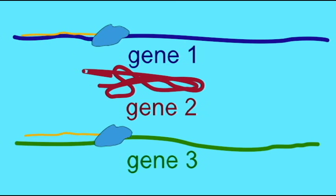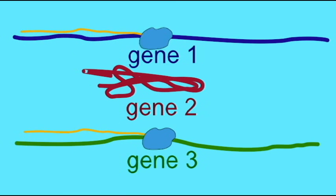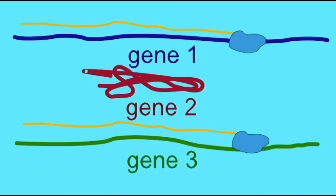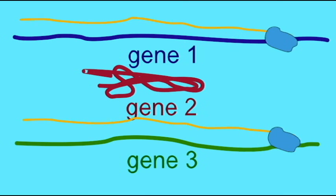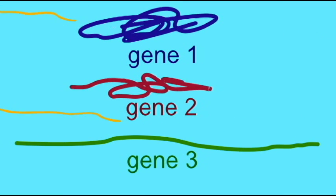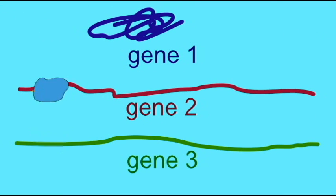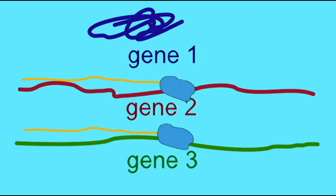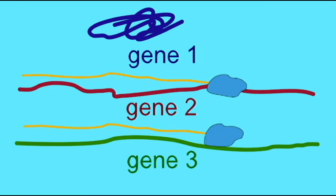So one of the ways that genes can be regulated is that their transcription can be controlled by whether or not the DNA is in the form of the tightly wound heterochromatin, or the more loosely wound accessible euchromatin.